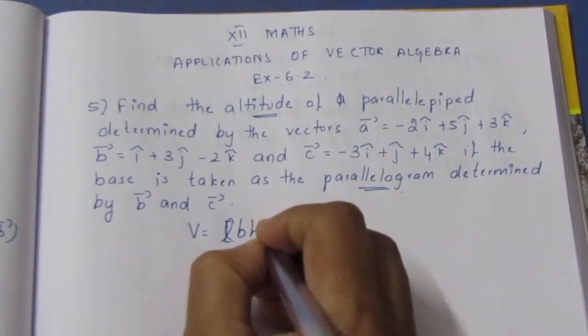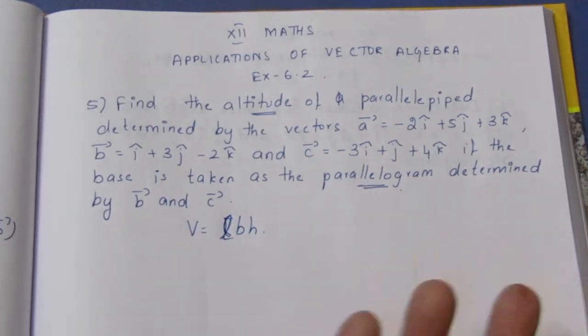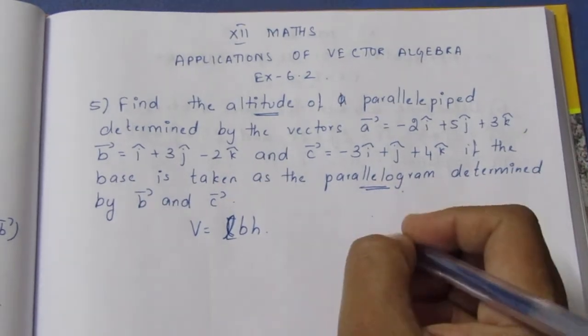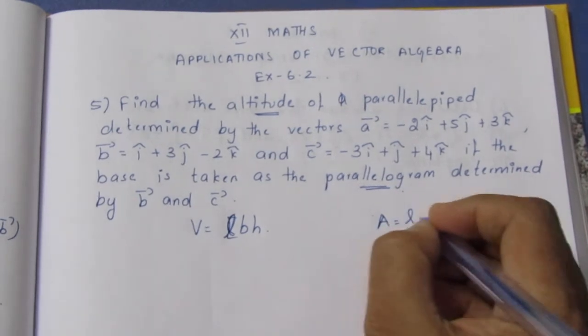Volume equals LBH. The length times breadth gives the base area. For a rectangle, area is L times B, so volume is LBH.